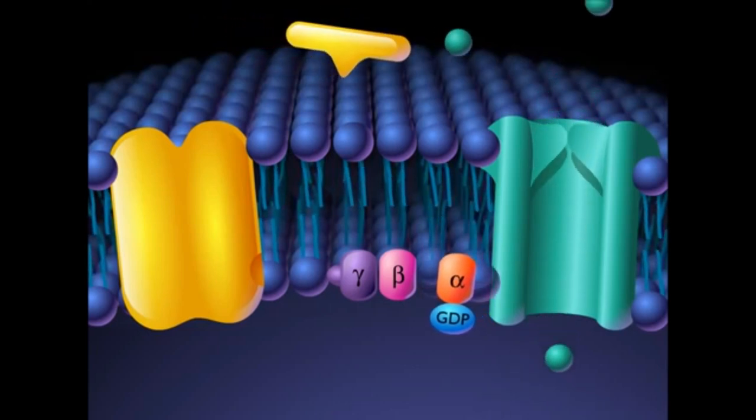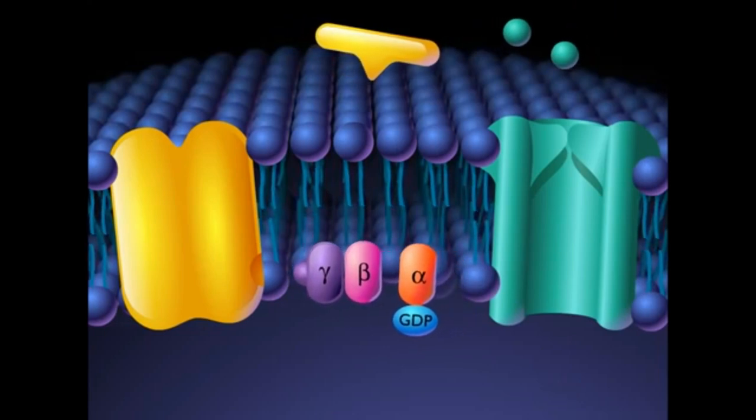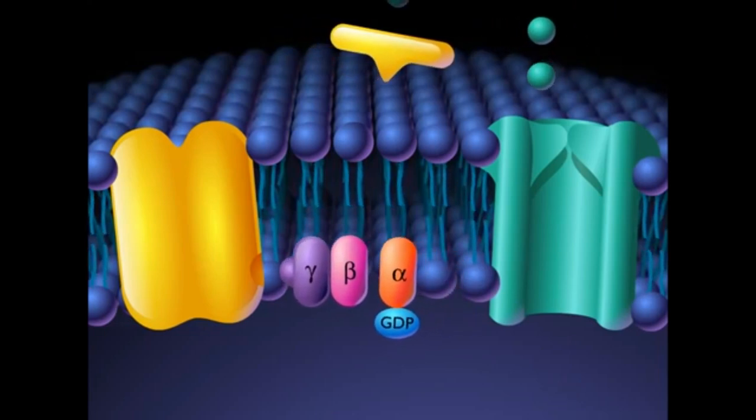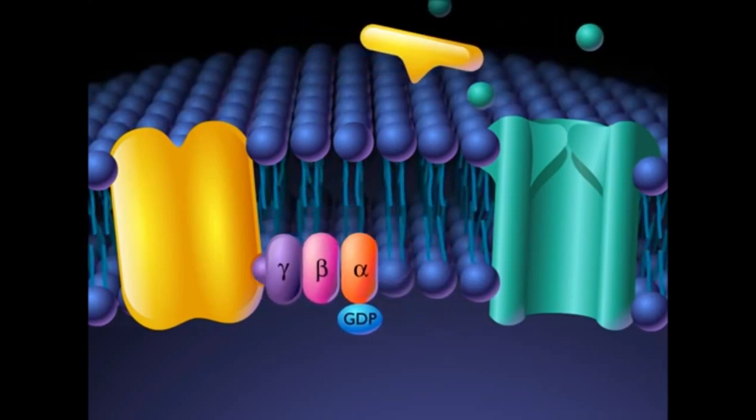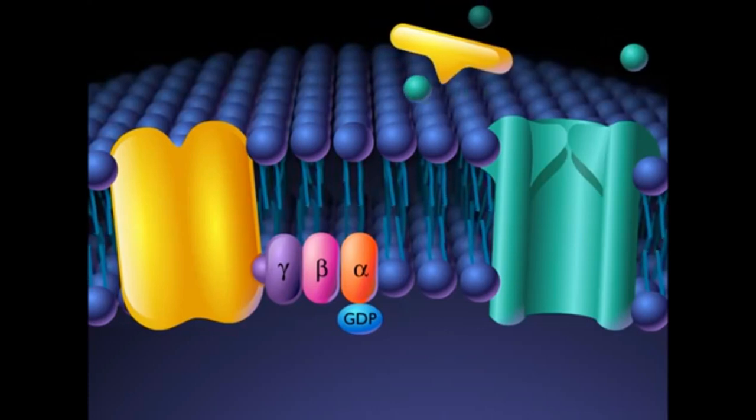The alpha subunit recombines with the gamma and beta subunits, and the G-protein recombines with the receptor.